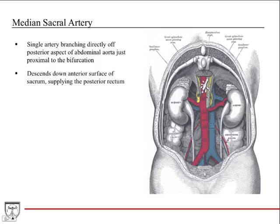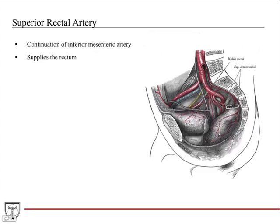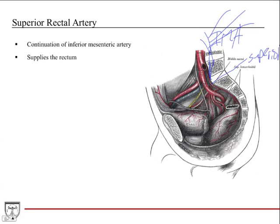Now a couple more lower-yield but still important arteries. The median sacral artery is just a single artery branching off the bifurcation of the abdominal aorta, and it descends down the anterior surface of the sacrum, supplying the posterior rectum. The superior rectal artery is the continuation of the inferior mesenteric artery — the IMA comes off, gives its branches to the gut, and then continues and turns into the superior rectal artery, which is the terminal branch of the inferior mesenteric and supplies the rectum.